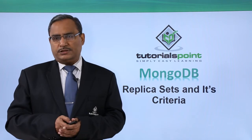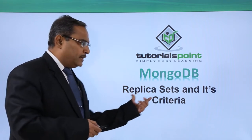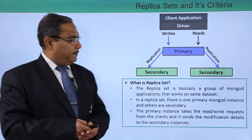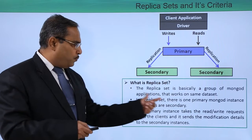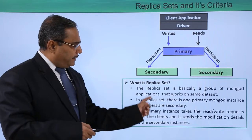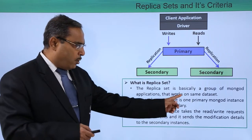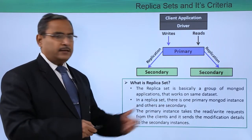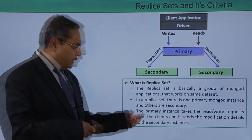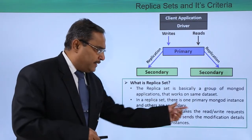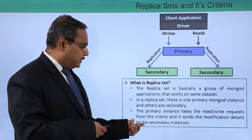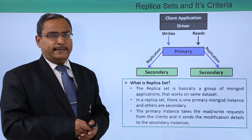Let us go for further discussion with diagrams regarding replica sets and its criteria. The replica set is basically a group of MongoD applications that work on the same data set. In a replica set, there is only one primary MongoD instance and the others are secondary. The primary instance takes the read and write requests from the client and sends the modification details to the respective secondary instances.